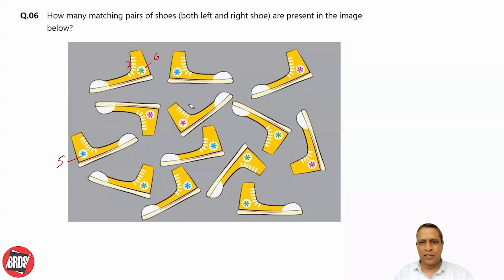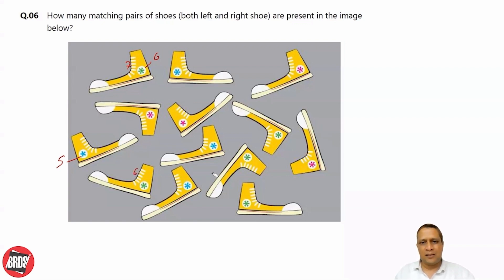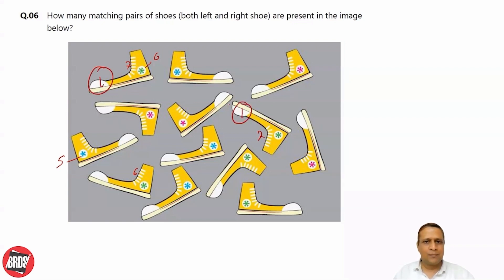Let's first look at the green shoes. This one has six petals, so no issue. If I count the number of lines: one, two, three, four, five, six - so this and this will not match. Now let me count another green shoe: this is six petals and this has one, two, three, five, six, seven lines. Okay, so this is one pair.